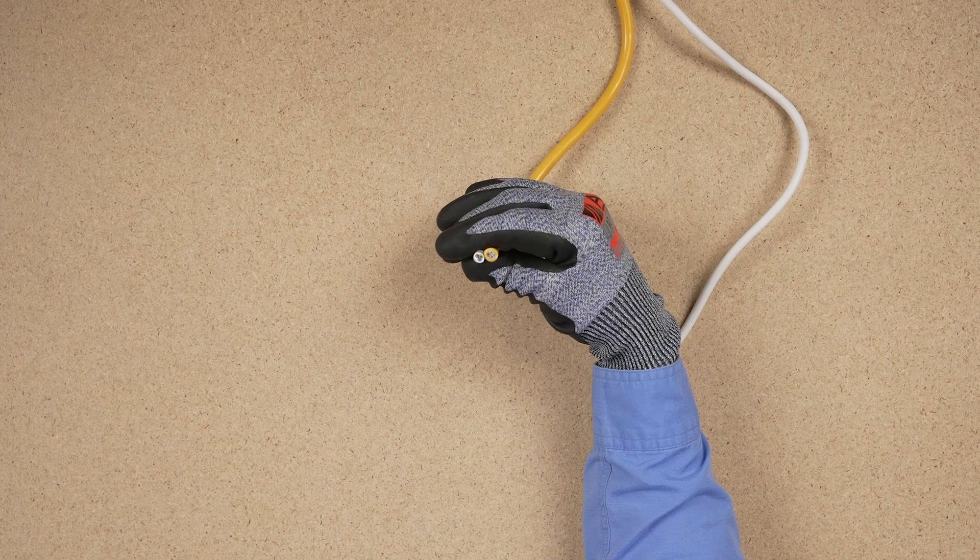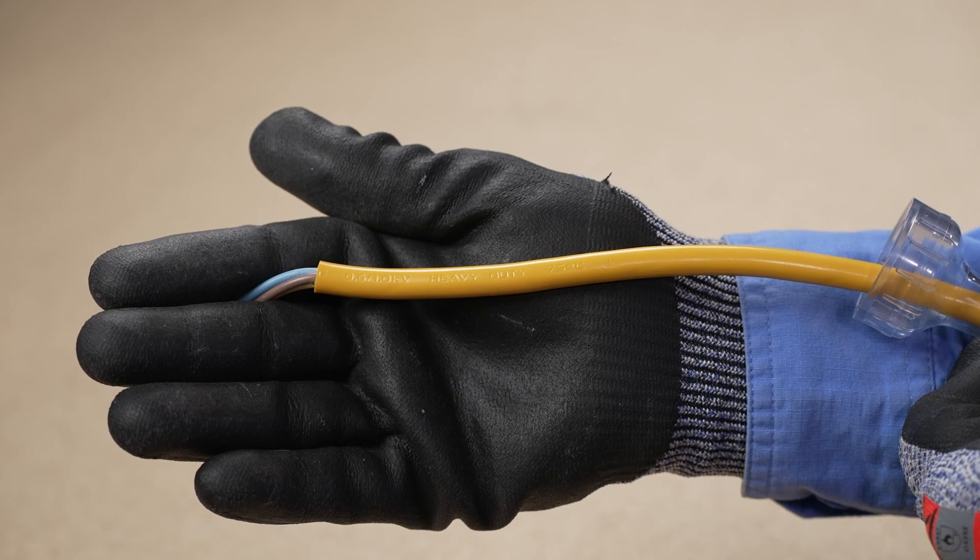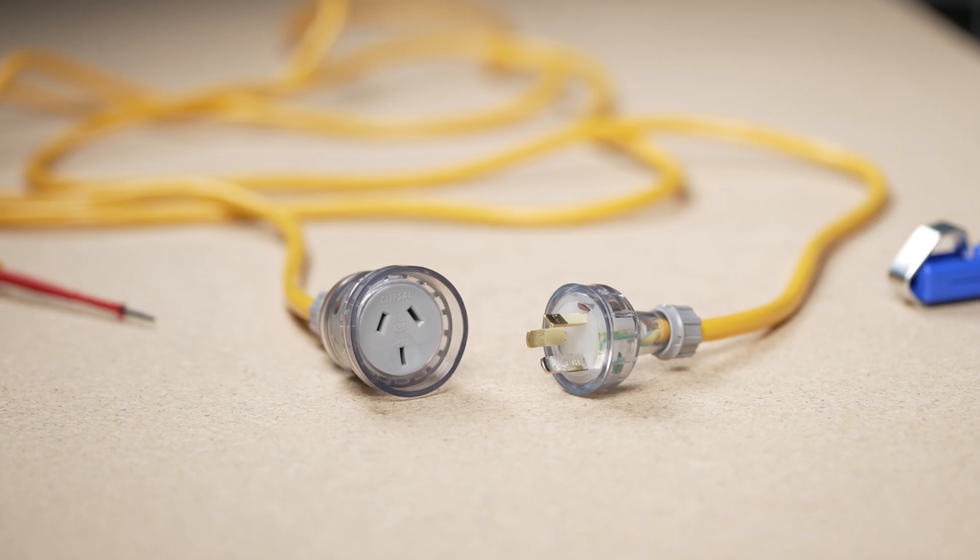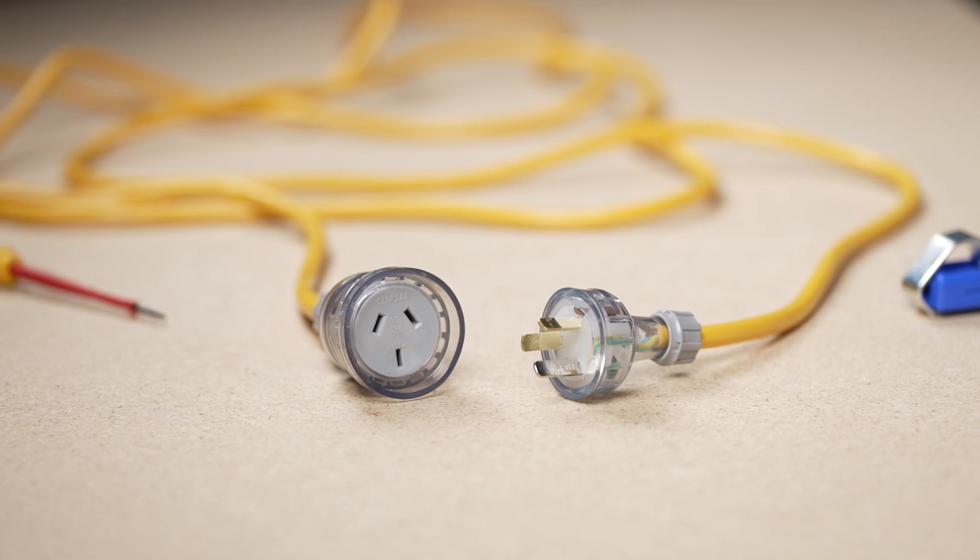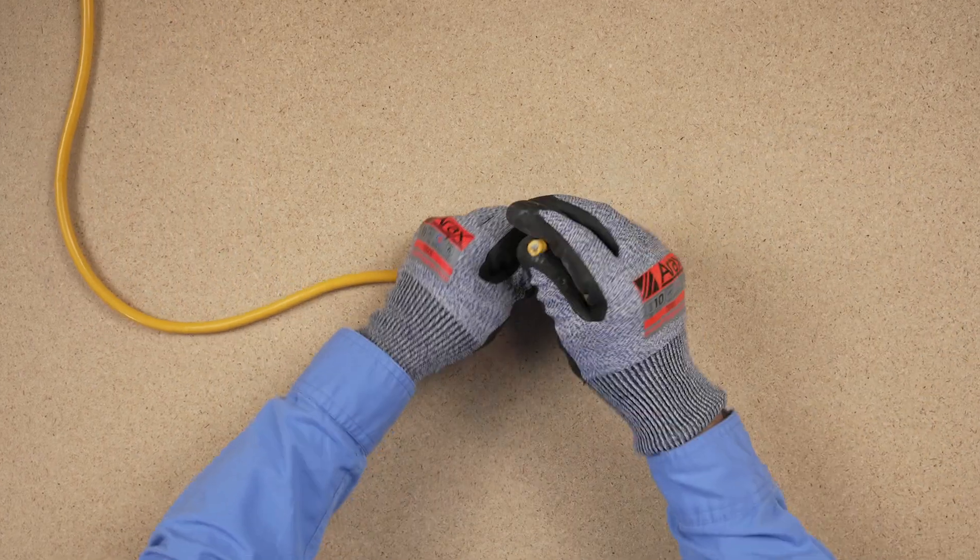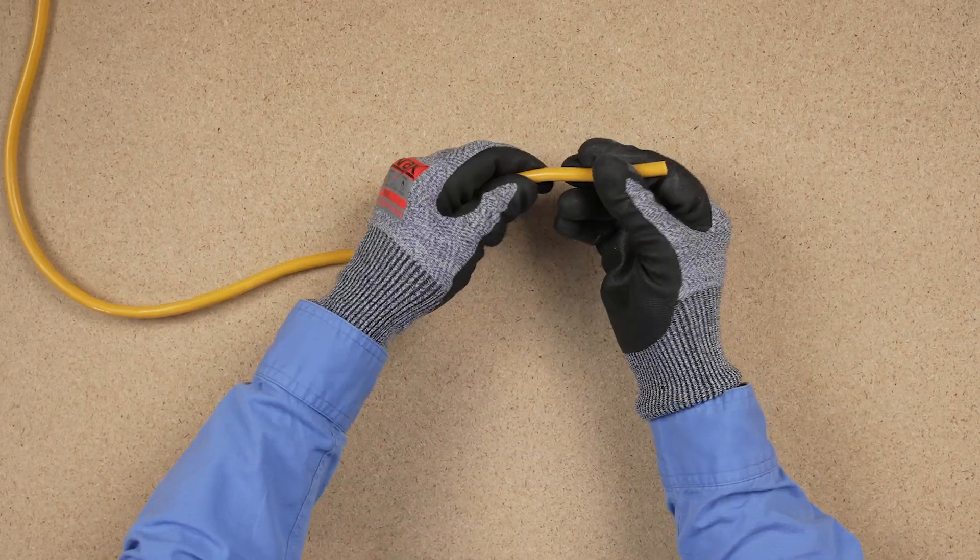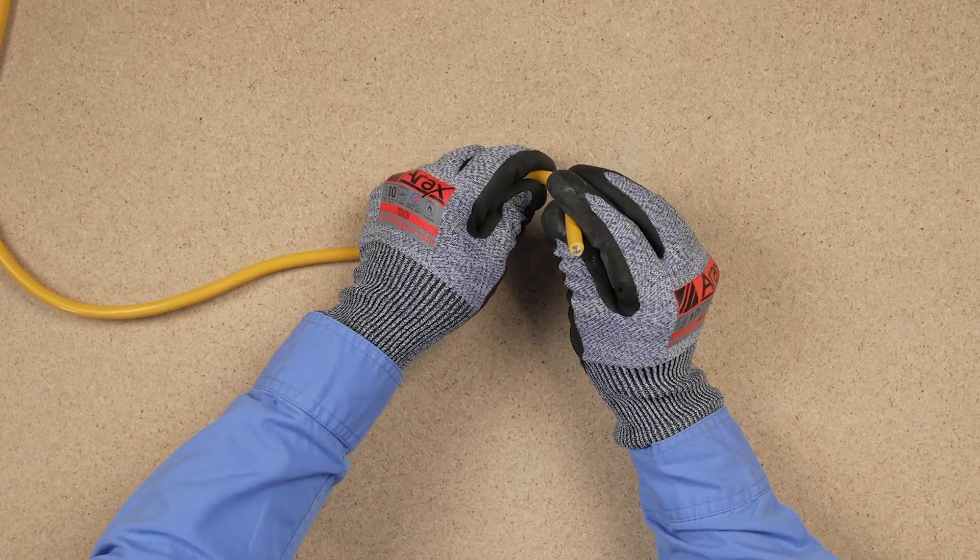The environment in which we use an extension lead will determine the duty of the flexible cord we select. In this video, we will use heavy duty cords and fittings to produce leads suitable for work in the construction industry. Heavy duty flexible cord provides better mechanical and wear protection due to its thicker outer sheath.